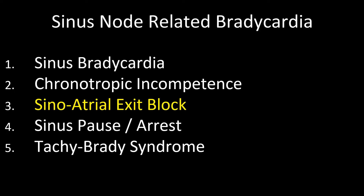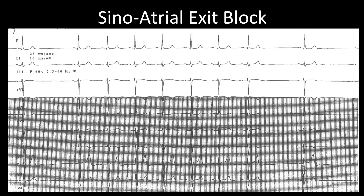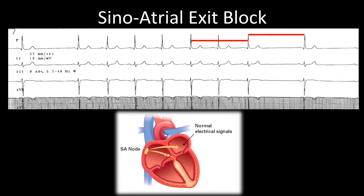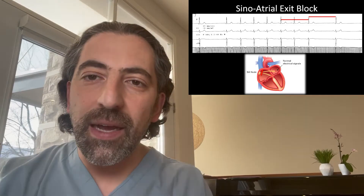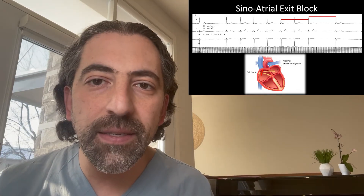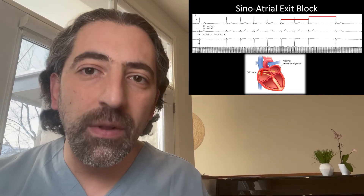The third sinus node-related bradycardia is sinoatrial exit block. In this case, there are periods of normal sinus rhythm, but then there's a dropped P-wave and a dropped QRS, generating a QRS-to-QRS interval that's exactly double the normal QRS interval. If we place our calipers between two normal QRS complexes, there will be an exact match to the two beats where there's a skipped complex in the middle. What's happening is that depolarization takes place at the sinus node, but due to scarring or fibrosis, the signal is blocked from exiting. The next signal exits on time, which is why the interval doubles. You can also get tripling of the interval episodically.